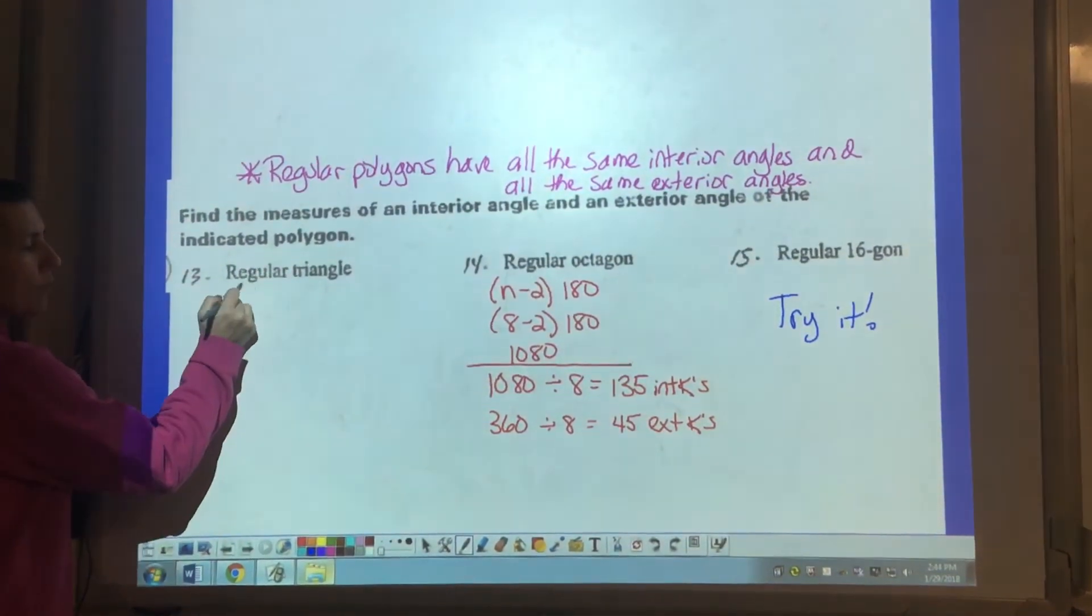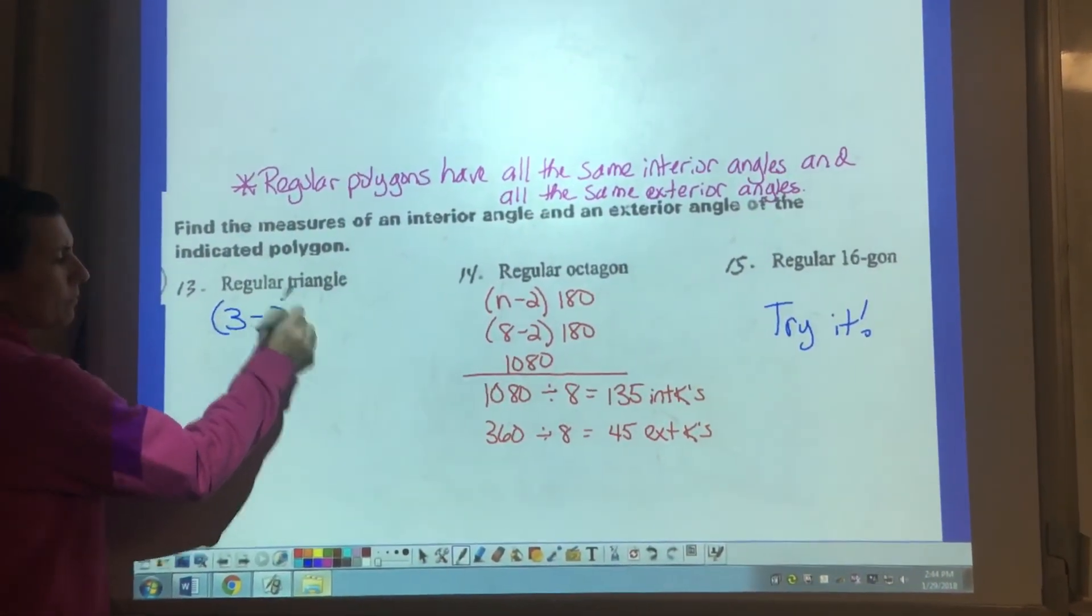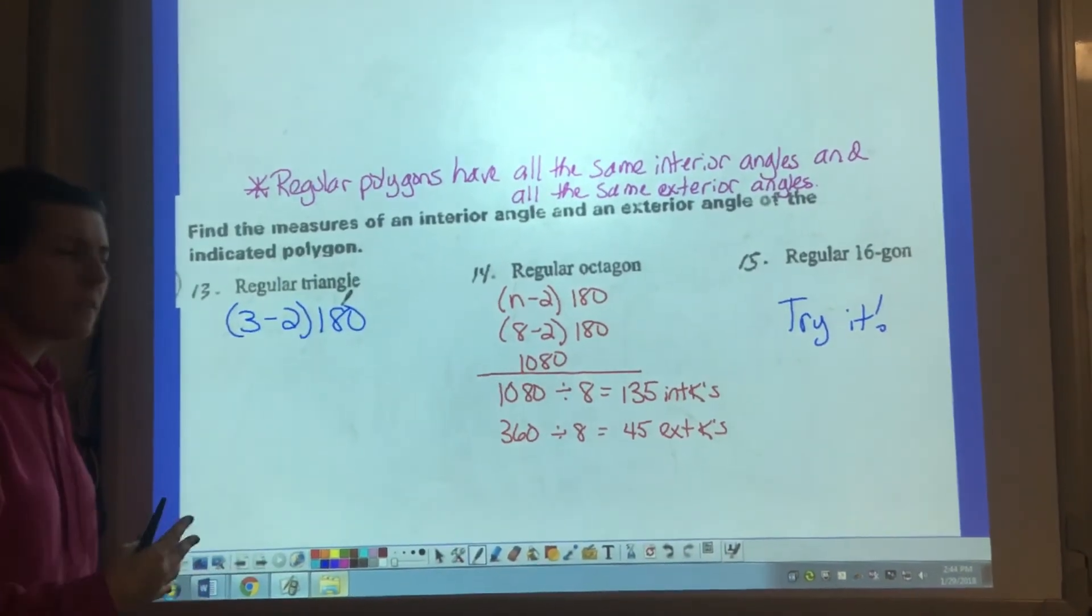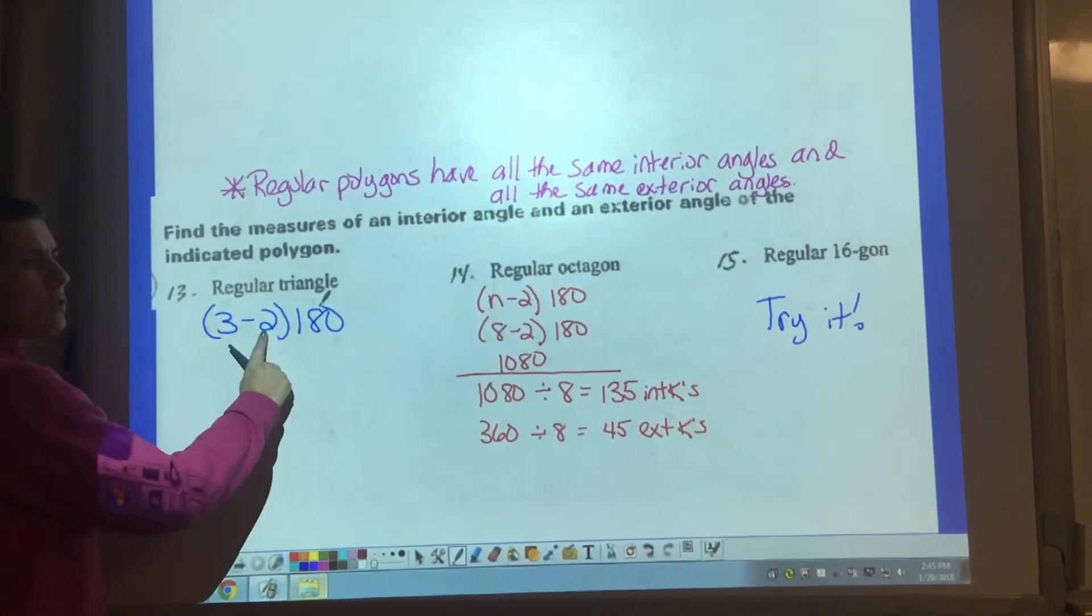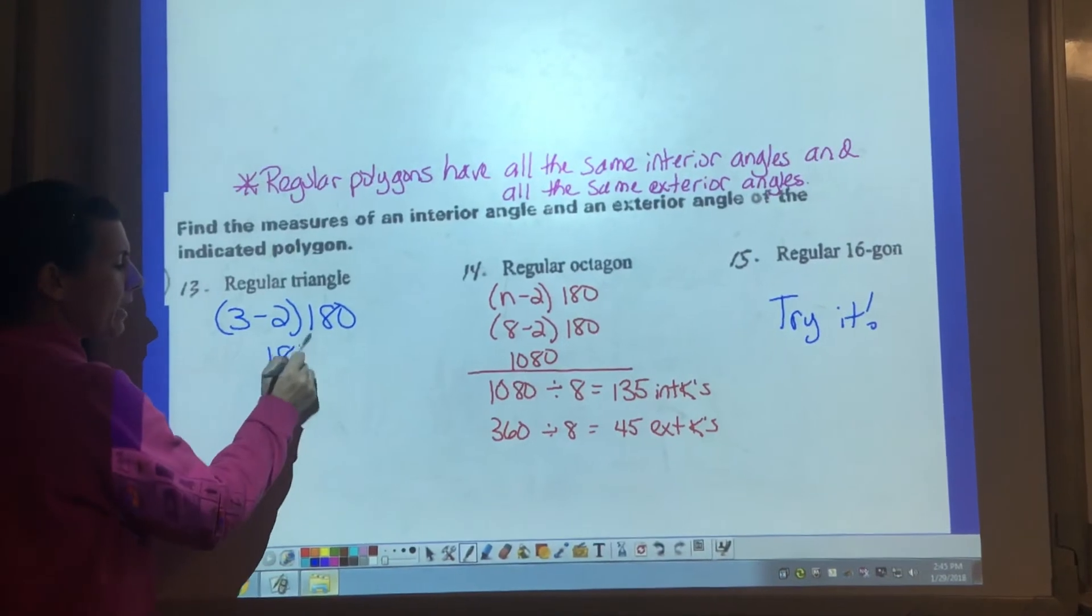Well, we know that a regular triangle has three sides. I'm just going through the motion so that you see the steps that are involved. 3 minus 2 is 1. 1 times 180 is 180.